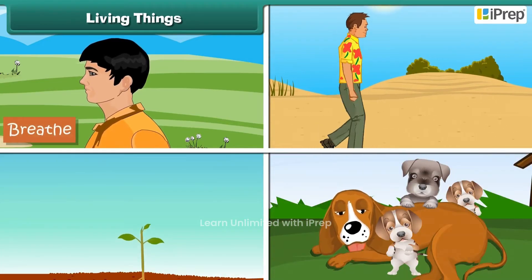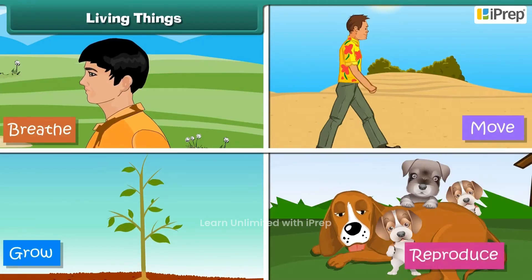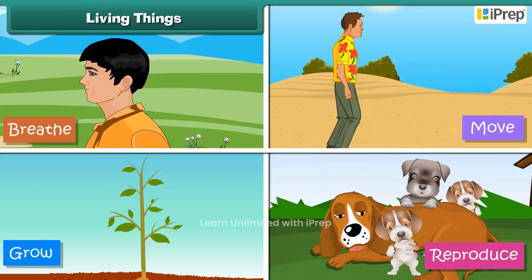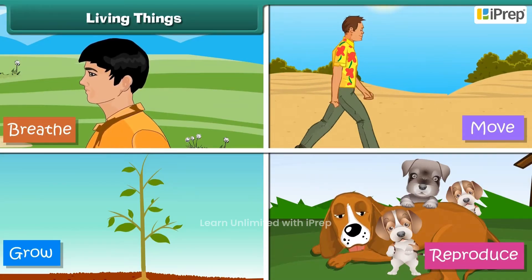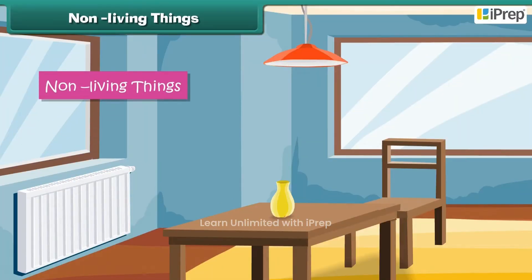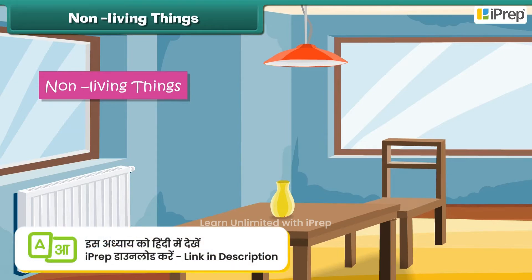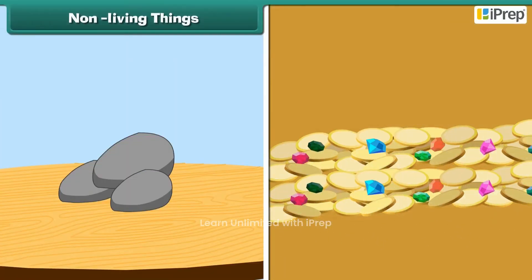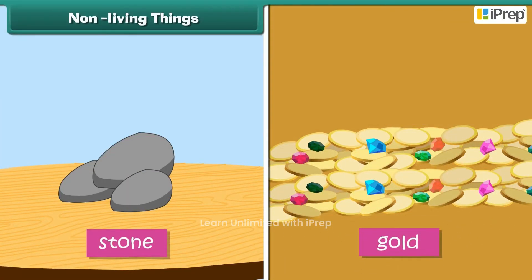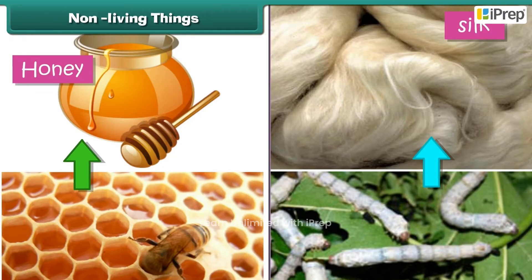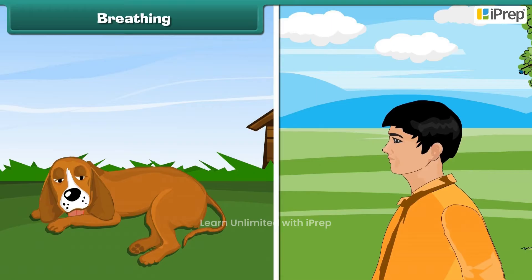Living things breathe, move, grow, and reproduce. Living things have sensation — they eat food and remove waste. Non-living things do not breathe, grow, or reproduce, and they do not have sensation. Some non-living things are natural, for example stone and gold. Some non-living things are derived from living things, for example honey and silk.